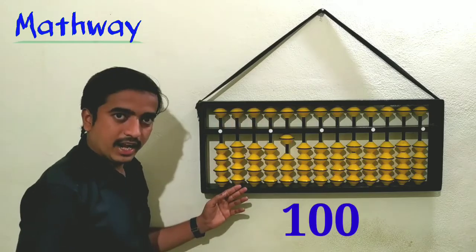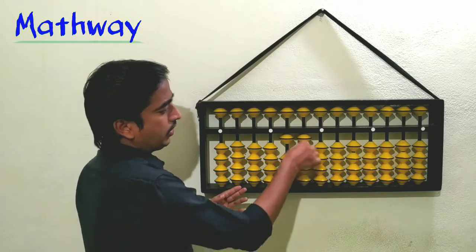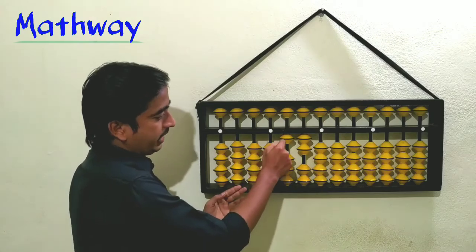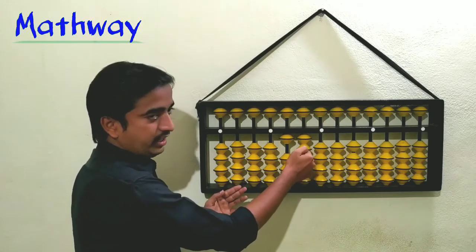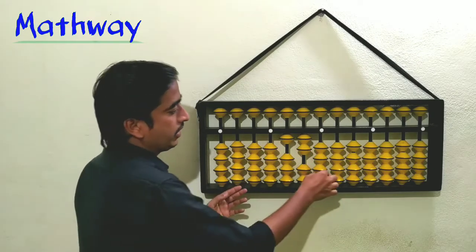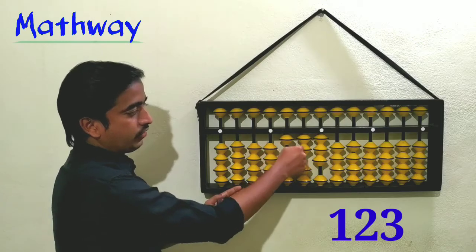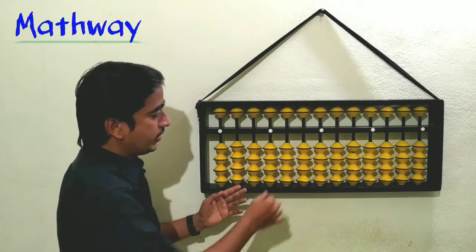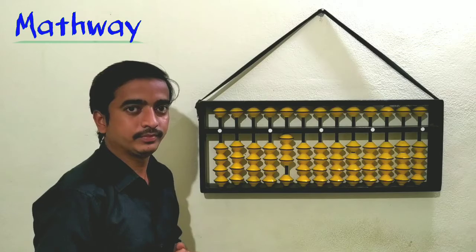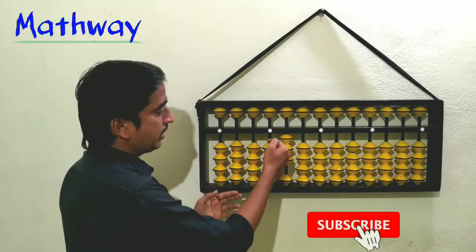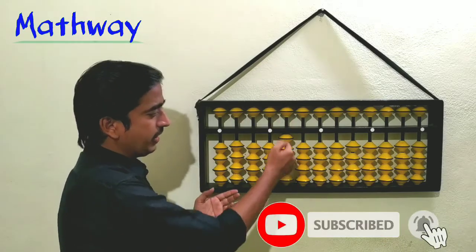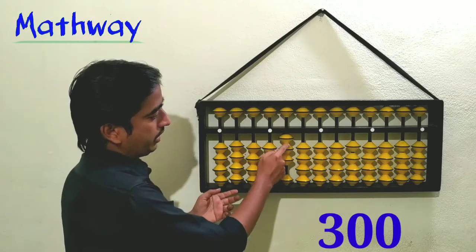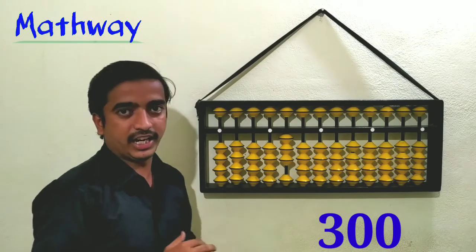Can you guess what this number is? It is one hundred twenty, or 120. Now 123. Can you guess what this number is? In the hundreds place, three beads are connected to the answer line: one hundred, two hundred, three hundred — so it is 300.